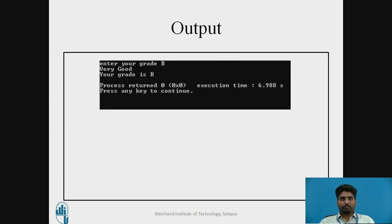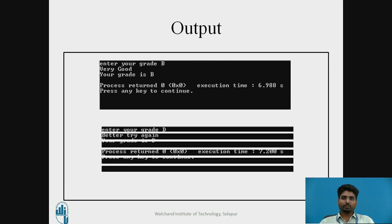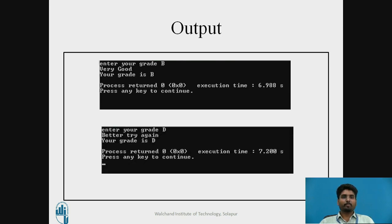Looking at the output: if the user enters grade B, it shows 'very good, your grade is B'. Similarly, if the user enters grade D, it shows 'better try again, your grade is D'. This is a simple program using switch statements.